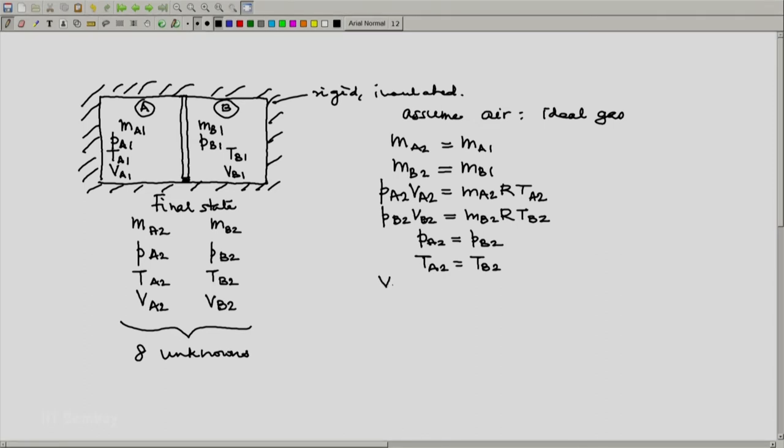So we will have the final volume of the system equals initial volume of the system. So we will have VA2 plus VB2 equals VA1 plus VB1. So these are seven equations.